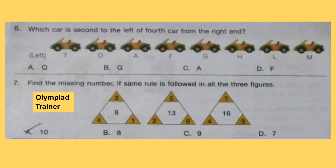Question 6. Which car is second to the left of the 4th car from the right end? First, find out the 4th car from the right end — that is car G. Then find the 2nd car to the left of G, which is car A. So option C is the answer.